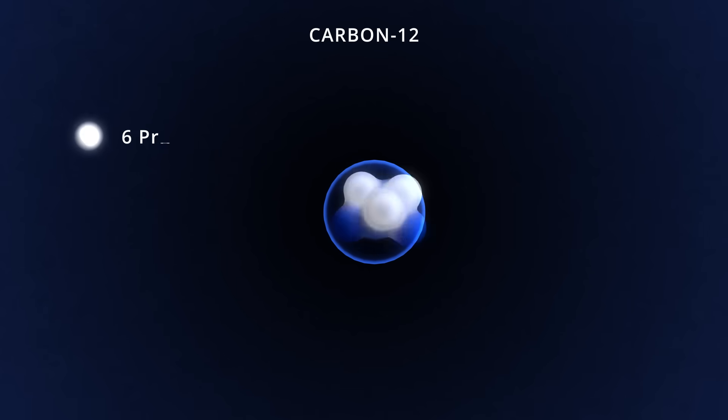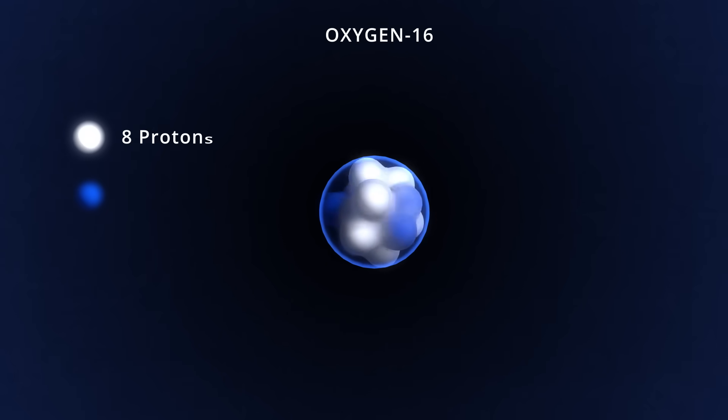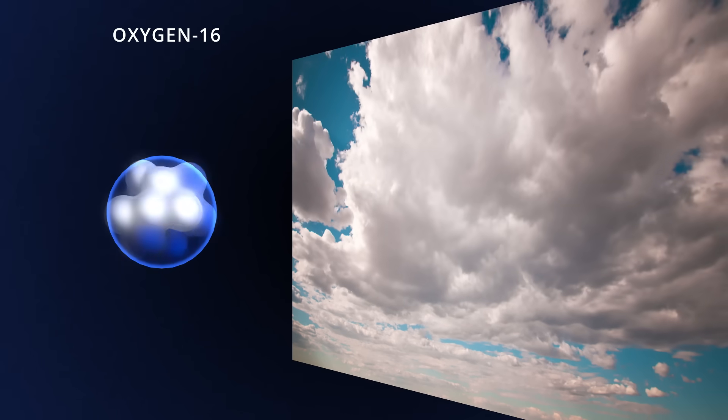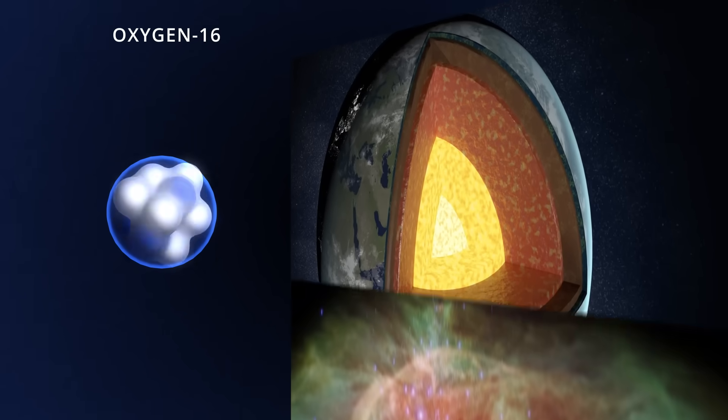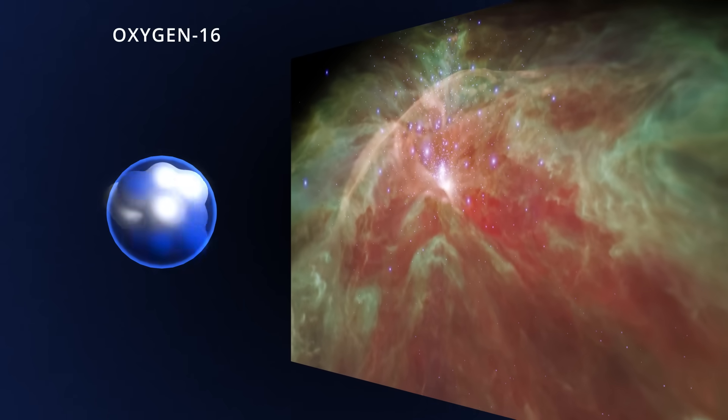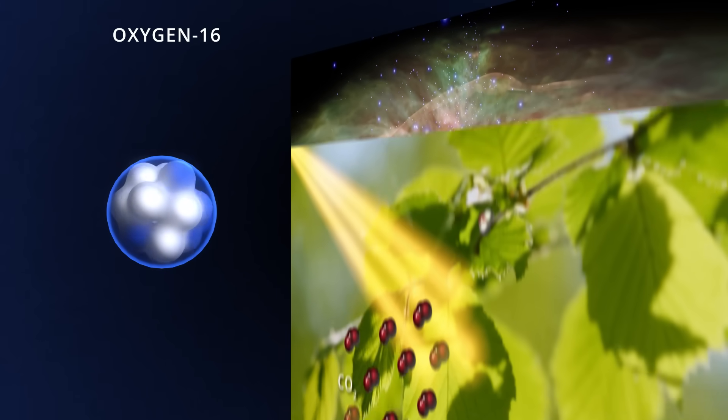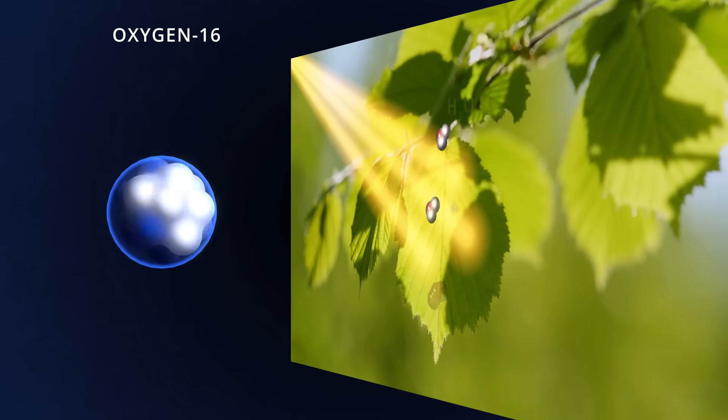Carbon-12 consists of 6 protons and 6 neutrons that occupy a sphere with a radius of 2.5 femtometers. Oxygen-16 packs two more protons and neutrons each in a sphere with a radius of 2.7 femtometers. Those additional protons and neutrons make a huge difference. Oxygen is a gas. Oxygen is the most abundant element in Earth's crust. And after hydrogen and helium, it is the third most abundant element in the universe. Oxygen is continually being replenished in Earth's atmosphere by photosynthesis.